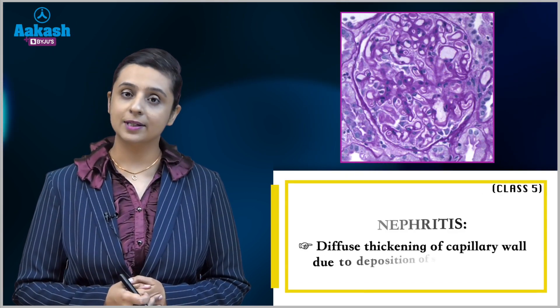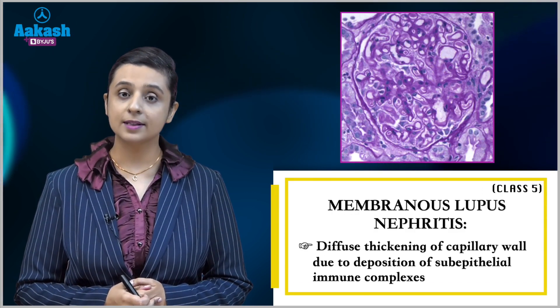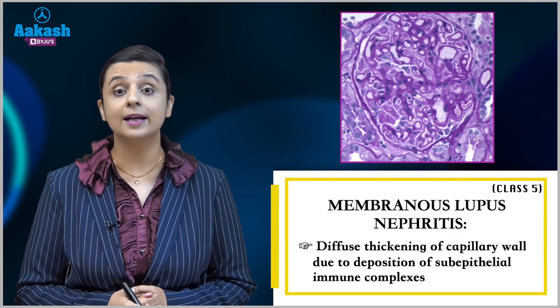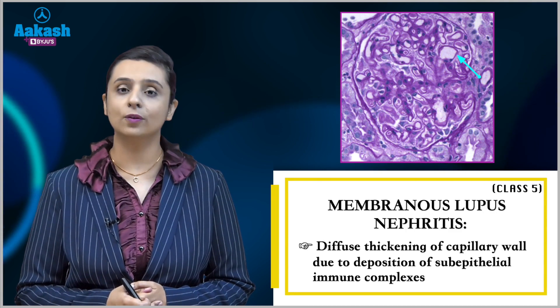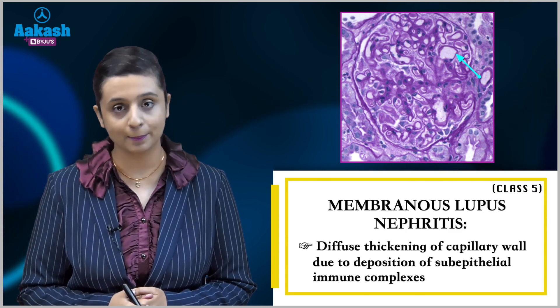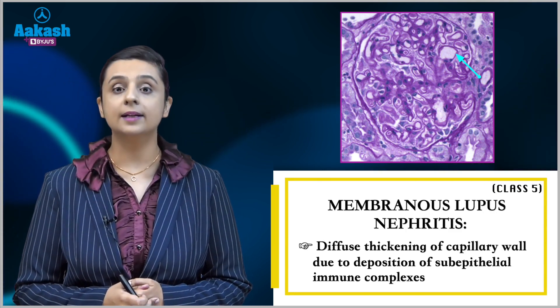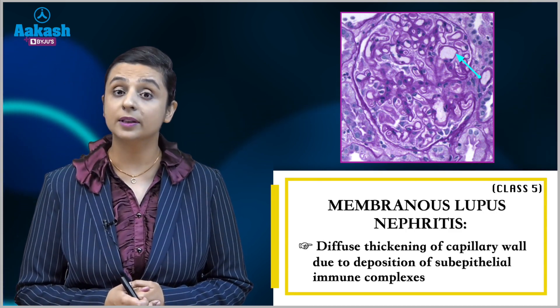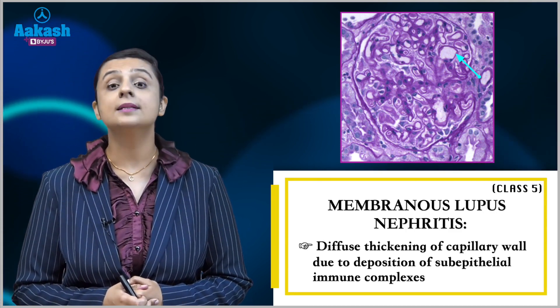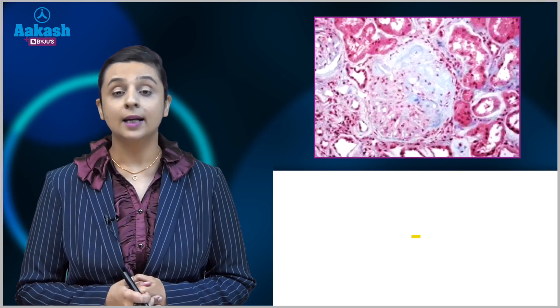Class 5 is membranous lupus nephritis, characterized by thickening of the basement membrane and the presence of sub-epithelial deposits.